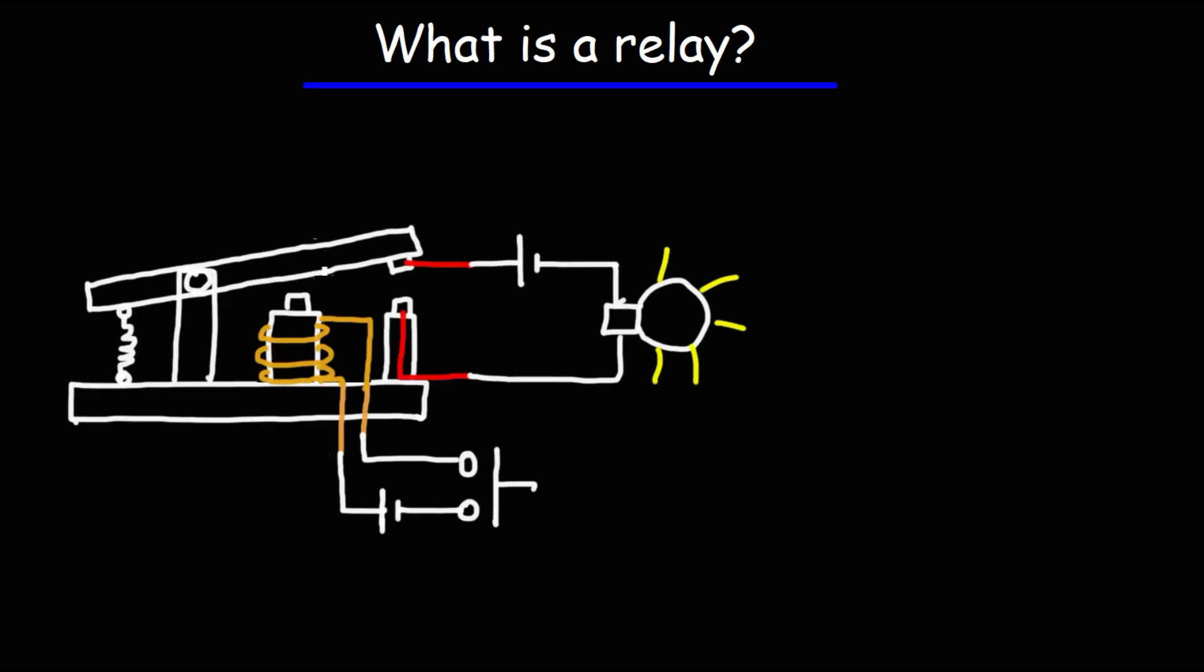Now let's talk about how a relay works. Once we close the switch on circuit one, current is going to flow from the battery, which will energize the electromagnet.